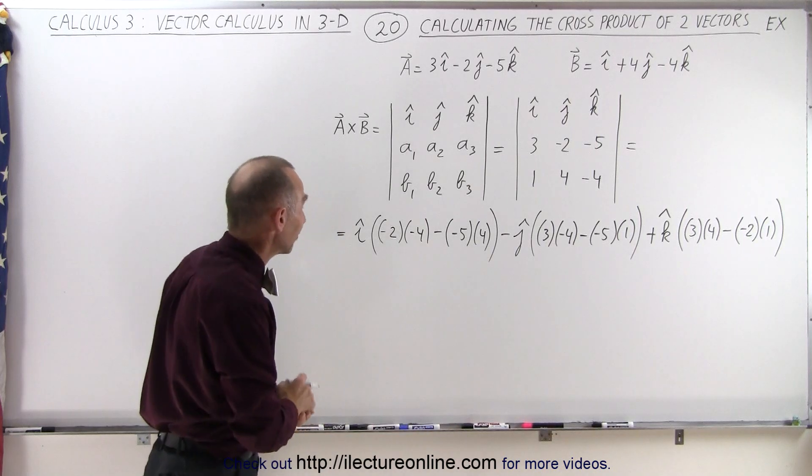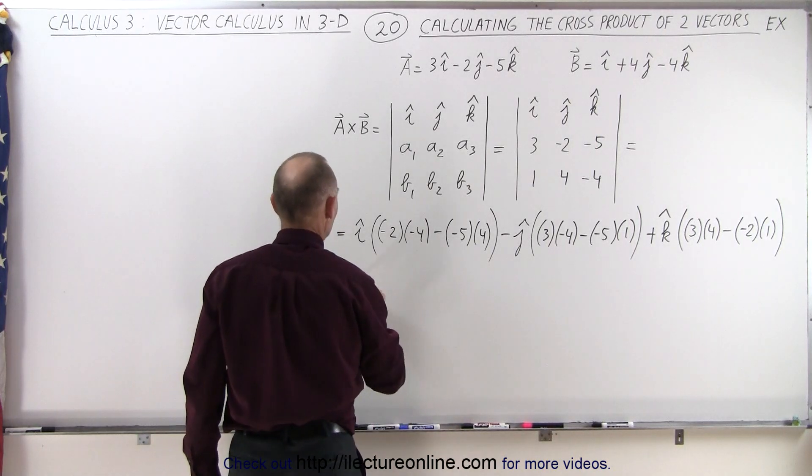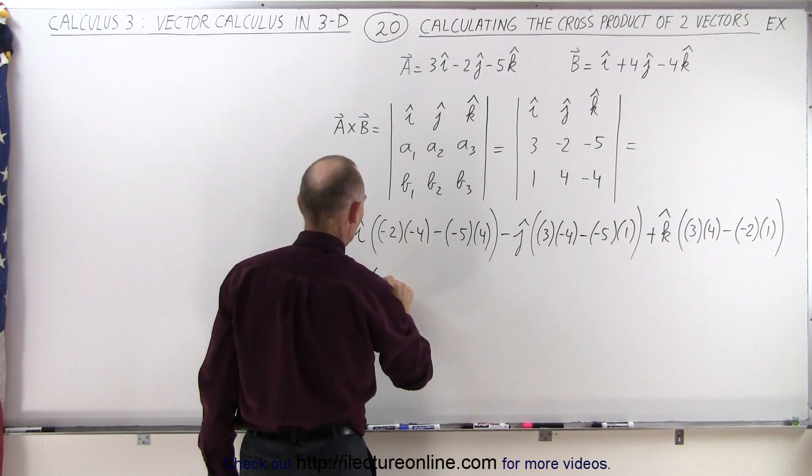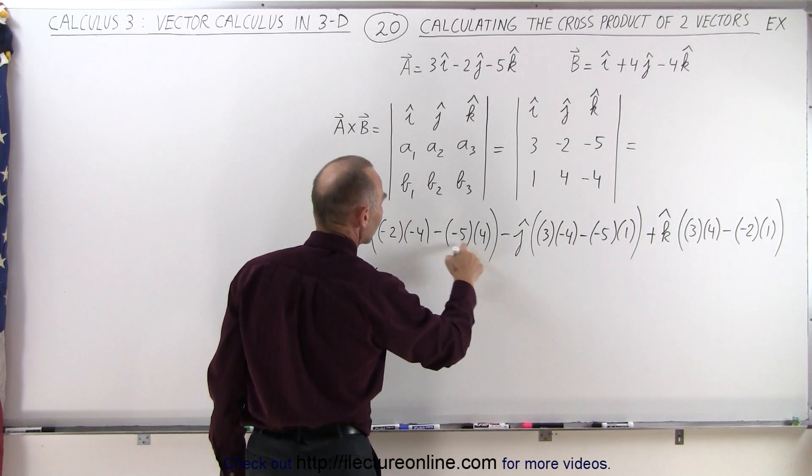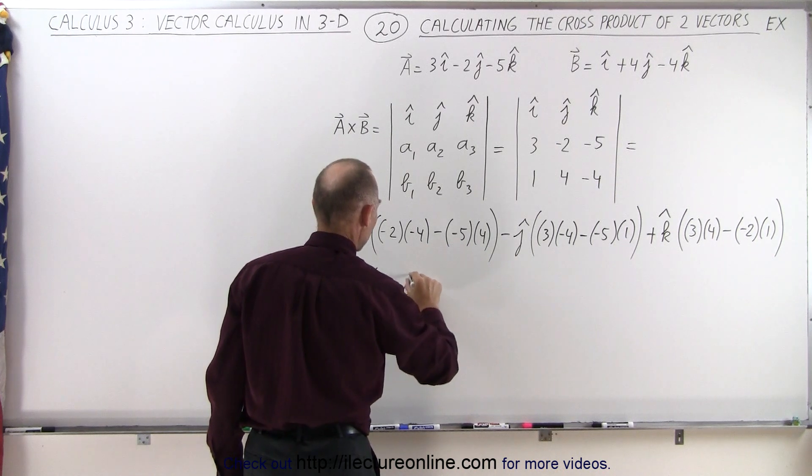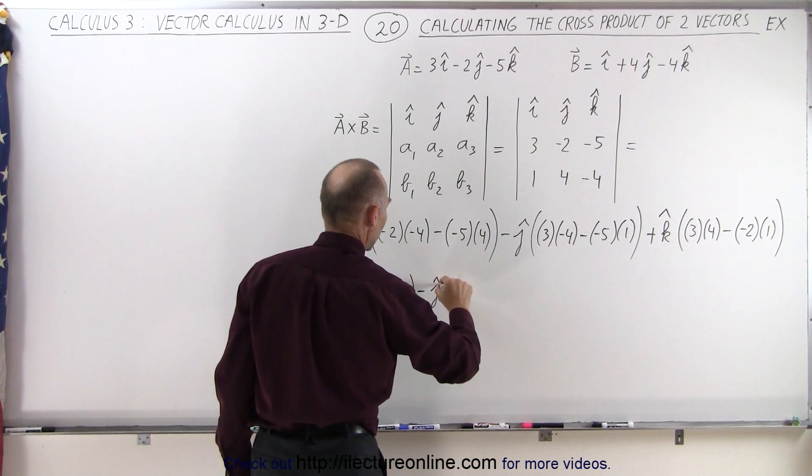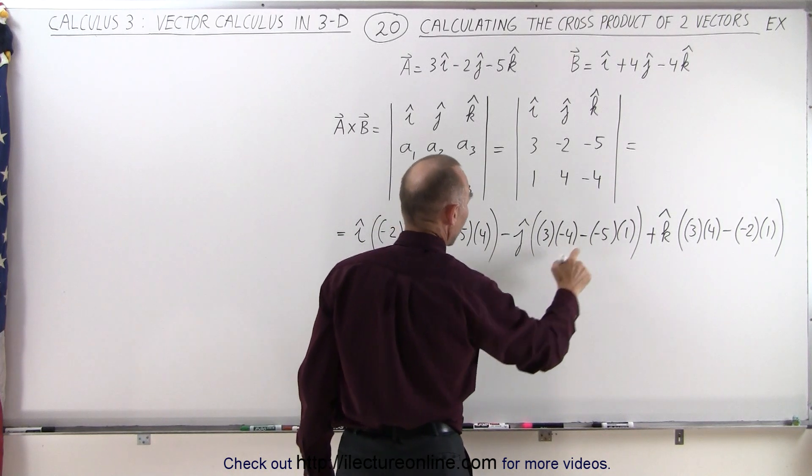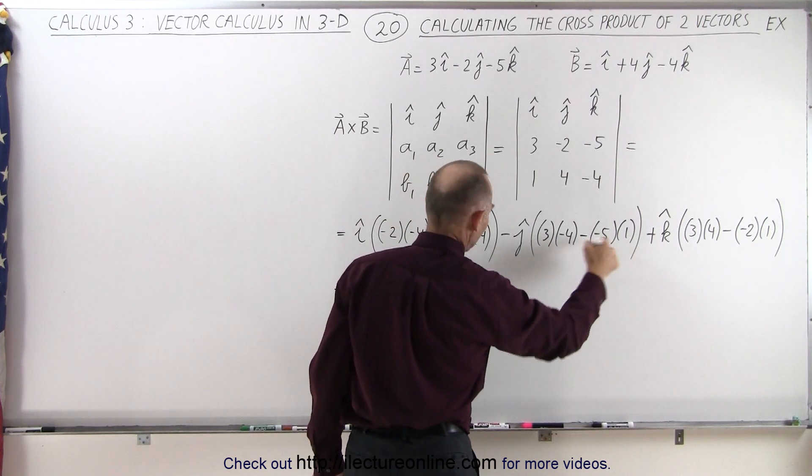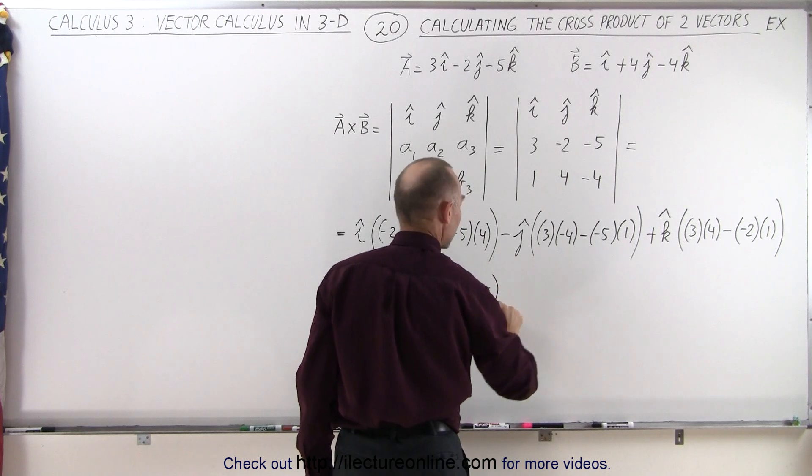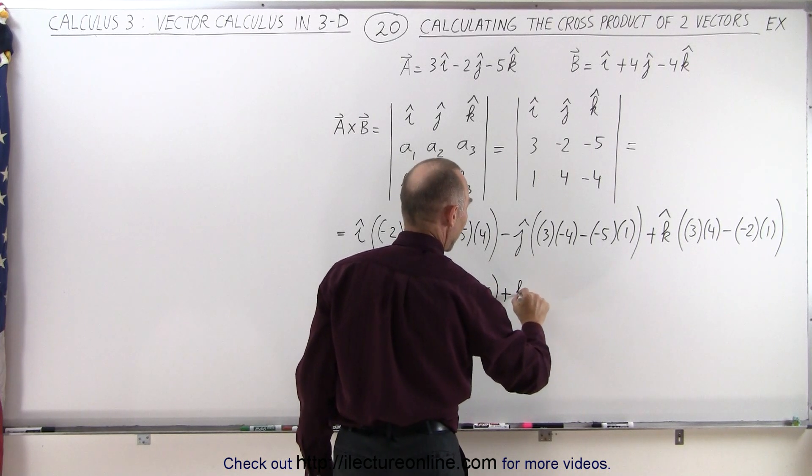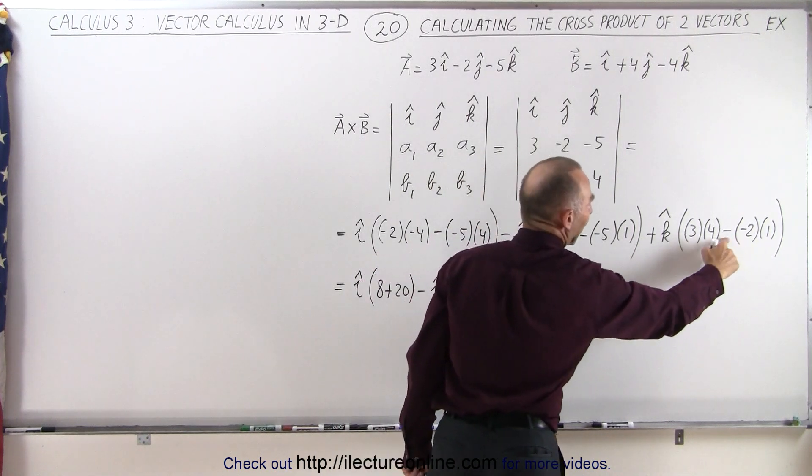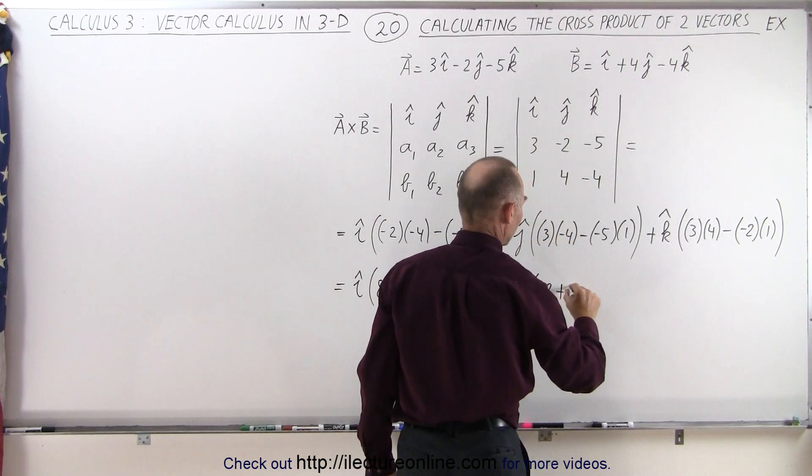Now all you have to do is simplify these. So let's do that. So this is equal to i times minus 2 times minus 4 is a positive 8. That's a minus 20 but times a minus that's plus 20. Minus j times 3 times a negative 4 is a minus 12. Minus times a minus becomes a plus 5. And here we have plus K and 3 times 4 which is 12 minus a minus minus 2. That becomes a plus 2.